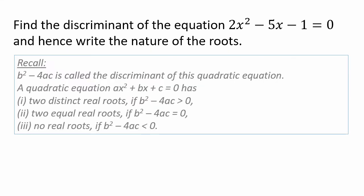What have we summarized here? b² - 4ac is the discriminant of the quadratic equation. Based on the value of b² - 4ac, we can tell the nature of the roots. Let us solve this problem now.